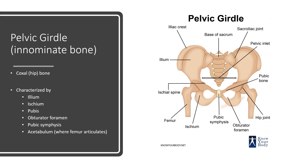Your pelvic girdle, also called an innominate bone, hip bone, or coxal bone, is characterized by the ilium, ischium, and pubis, as well as the obturator foramen, the pubic symphysis, and the acetabulum, which is where the femur articulates with your pelvic girdle.